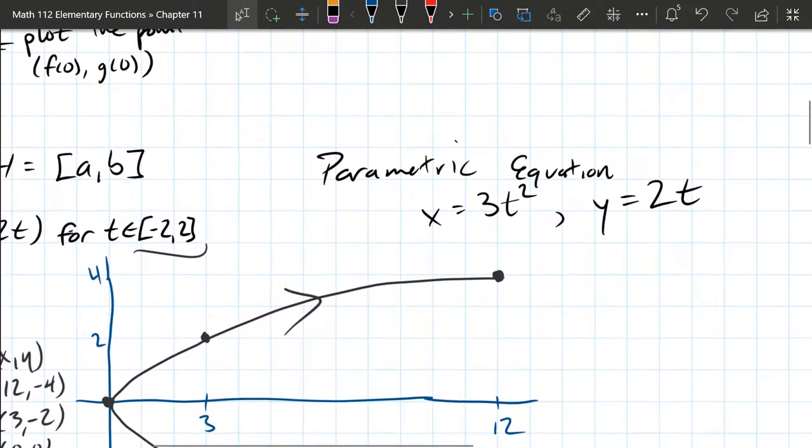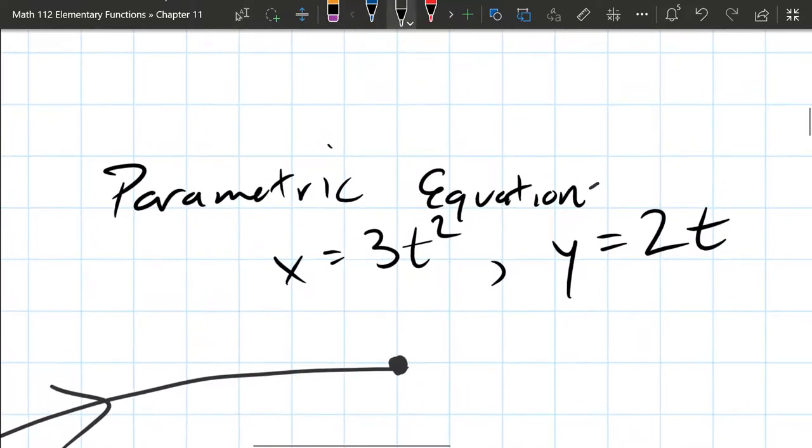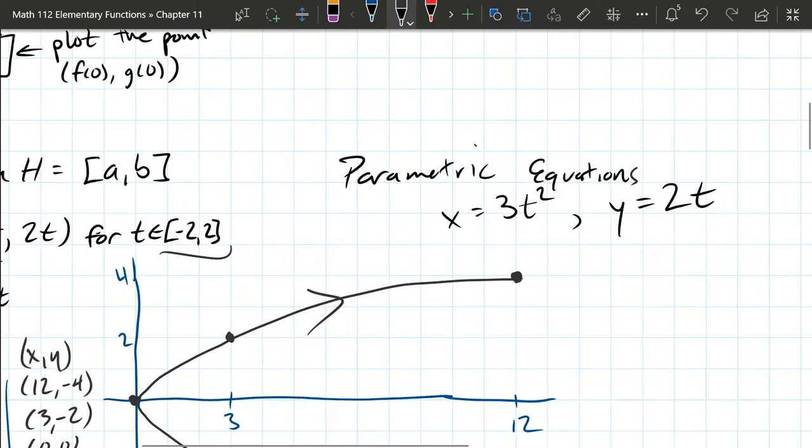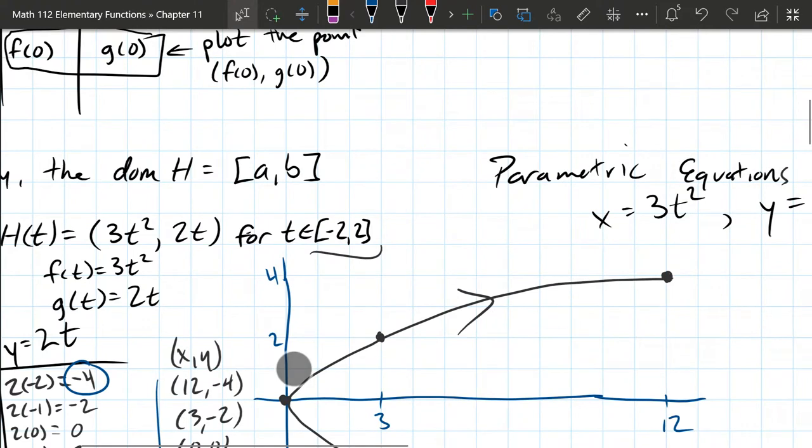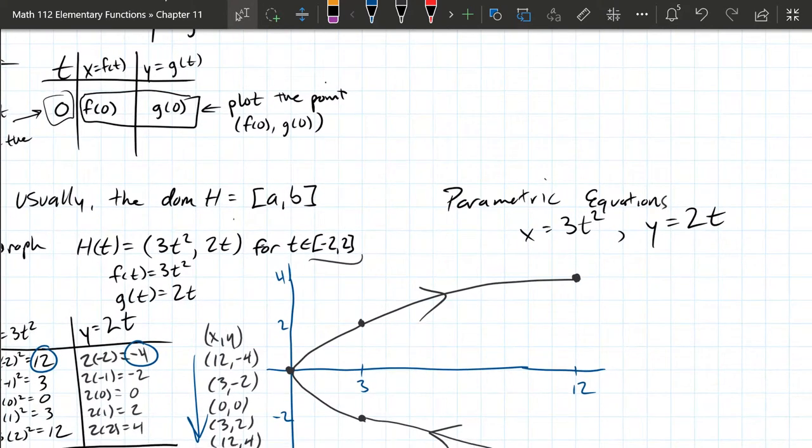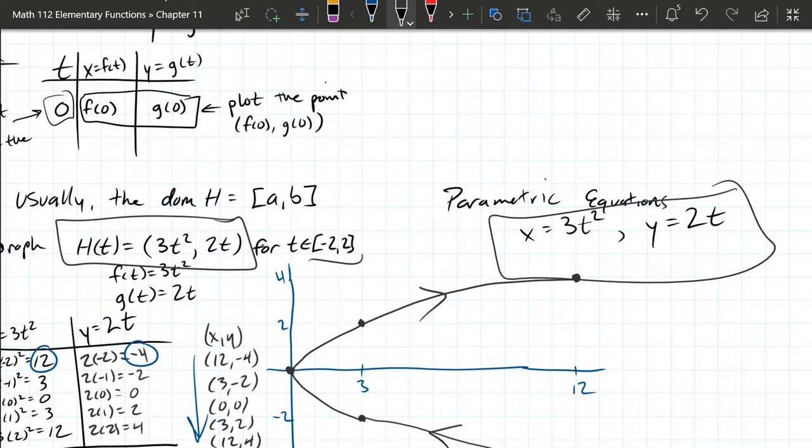Sometimes you're going to see the word parametric equations. And if you see the word equations instead of function, all that means is pull the two parts of the function apart. So we got x equals 3t squared, y equals 2t. That would be the parametric equations that correspond to the graph we just drew and correspond to the parametric function right here. So the equations and the functions represent the exact same phenomenon. It's just written in a slightly different format.